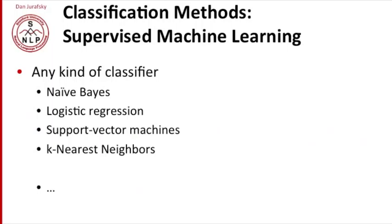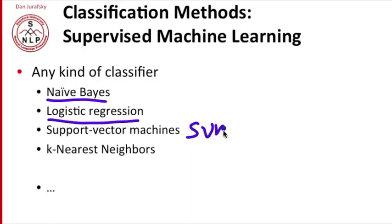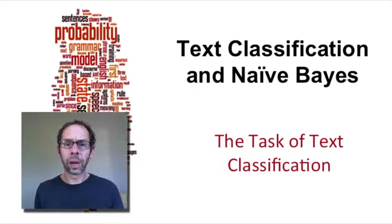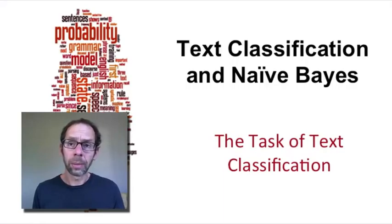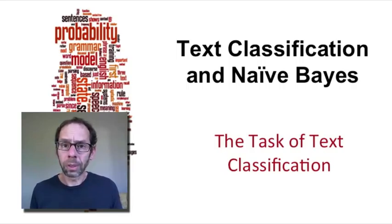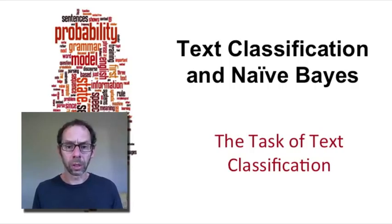There are lots of kinds of machine learning classifiers. We're going to talk today about Naive Bayes, but later in the course we'll discuss logistic regression, and we'll touch on other kinds of classifiers like support vector machines (also called SVMs), k-nearest neighbors, and many others. No matter which classifier we use, the task of text classification is to take a document, extract features that represent it, and build a classifier that can tell us which class the document belongs to.